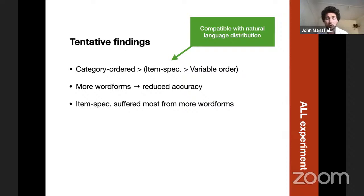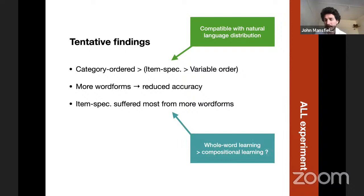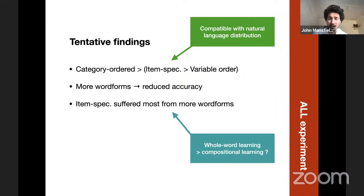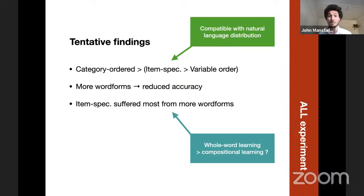We also found that as participants were asked to learn more different word forms, their accuracy went down, and those in the item-specific condition suffered the most. A possible explanation is that participants may use different mixtures of whole-word learning versus compositional strategy — breaking things down into affixes. Whole-word learning would suffer more as the number of combinations grows, whereas compositional learning allows reuse of learned affixes. The finding that item-specific condition suffered most could be because those participants were actually using more whole-word learning as opposed to compositional learning.